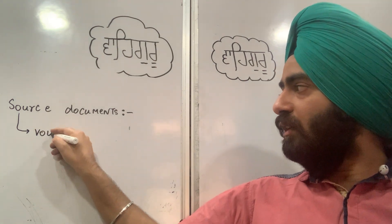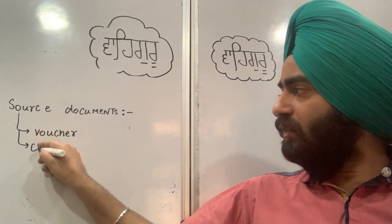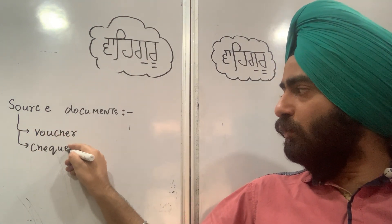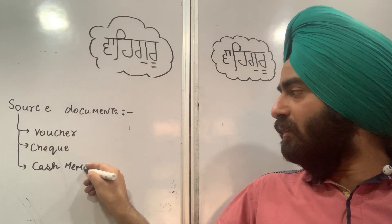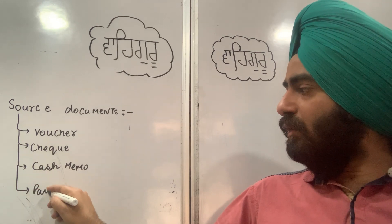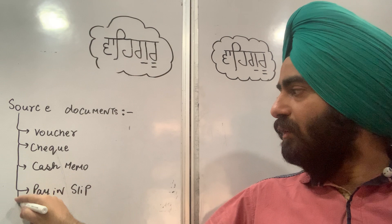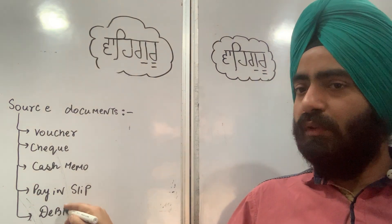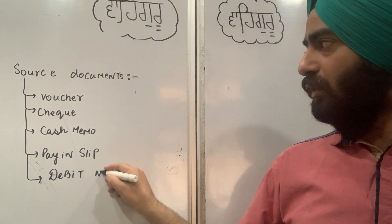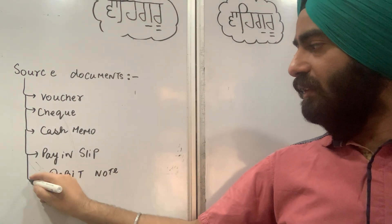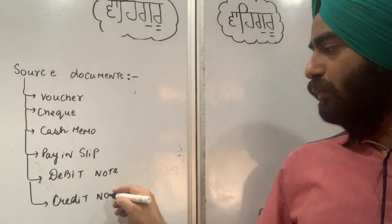Examples of source documents include: vouchers, cheque, cash memos, pay-in slip, debit note, and credit note. These are the examples of source documents.